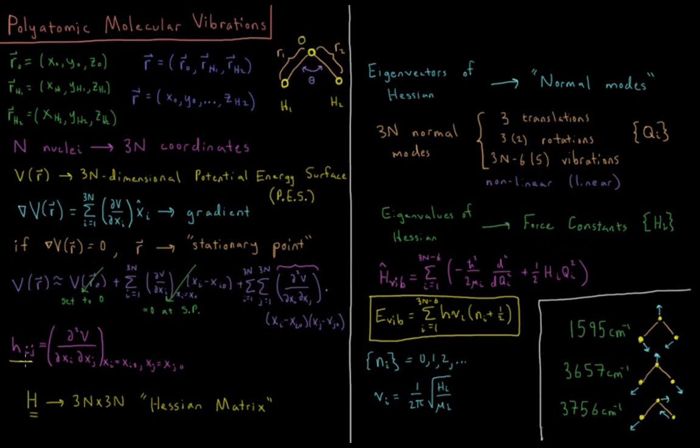So these second derivatives here, we're going to write in shorthand as HIJ, second derivative evaluated where these XI and XJ, one of these coordinates are at both of their equilibrium values. And then we're going to build a big matrix H, which is a 3N by 3N matrix called the Hessian matrix, which contains all of these mixed second partial derivatives.